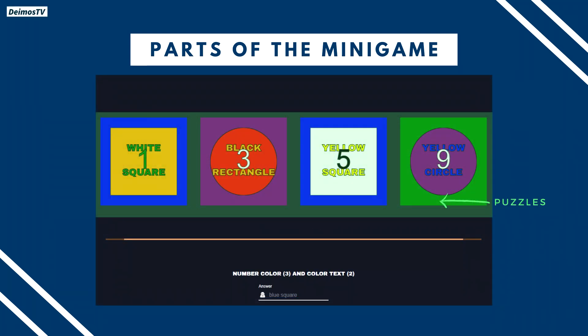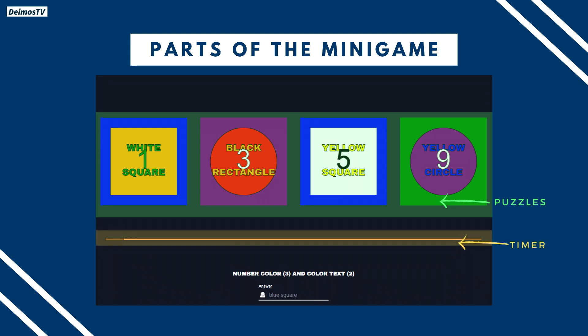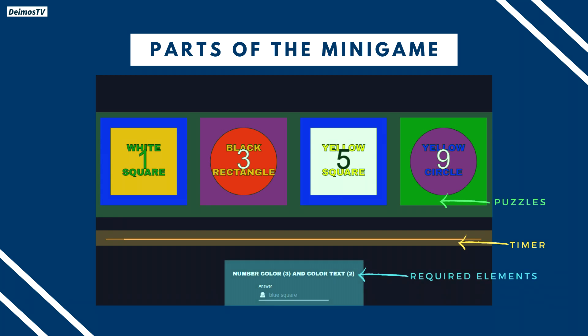Second is the puzzles, which replace the sequence and contain the elements for the minigame — I'll be discussing those elements later on. Third is the timer, which simply tells you how much time you have left to accomplish the minigame. Last is the required elements — this is the text below, for example saying 'number color 3' and 'color text 2,' which are the elements you need to identify.